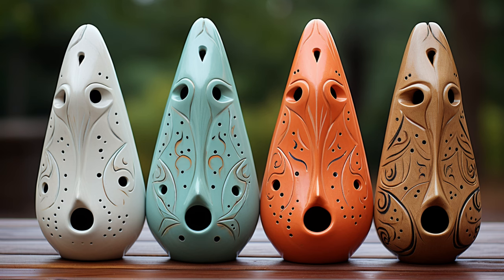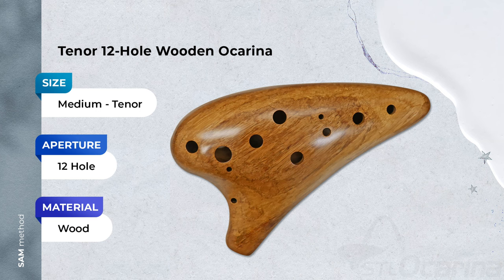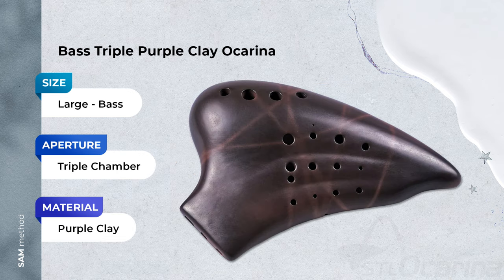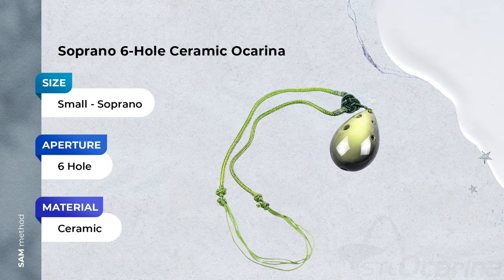Now that you've got a grasp of the SAM method, let's put it into action as we examine various ocarinas. For example, this is a 10 or 12-hole wooden ocarina. This is a bass triple-chamber purple clay ocarina. This little cute necklace is a soprano six-hole ceramic ocarina. And there you have it — the SAM method, your trusty guide to understanding ocarinas a little better.